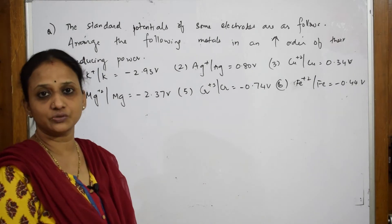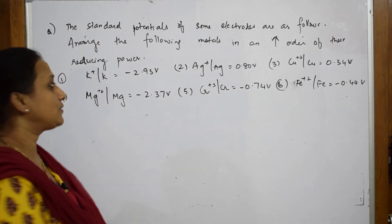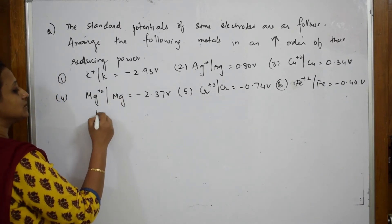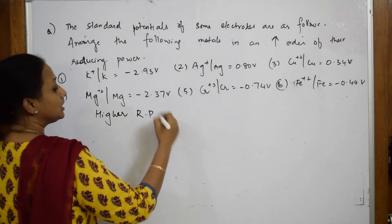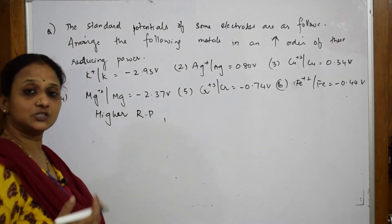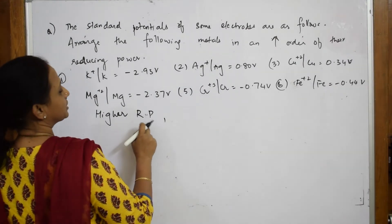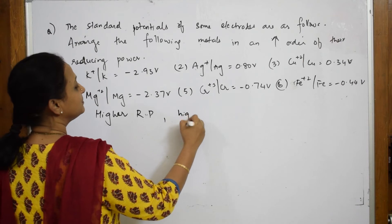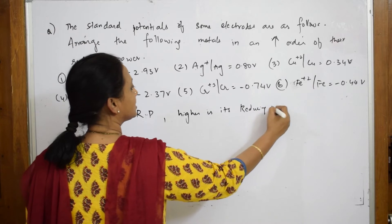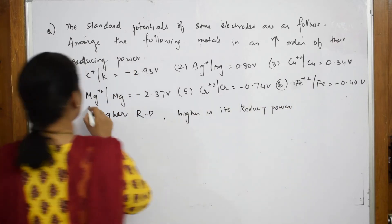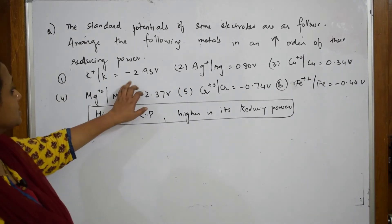As soon as such a question is given to you, remember — it's highly impossible to memorize the entire electrochemical series. The key thing to remember is: higher the reduction potential, higher is the tendency to undergo reduction. Higher the reduction potential value, higher is its reducing power — meaning it will undergo more reduction.